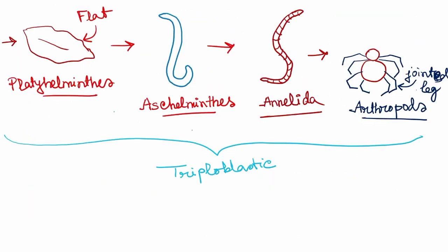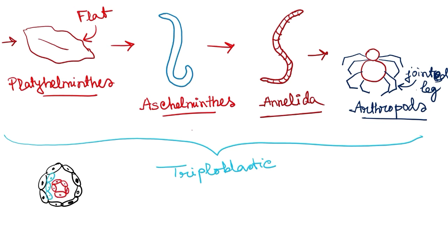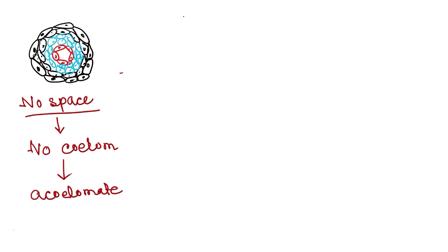Platyhelminthes have all three germ layers — ectoderm, endoderm, and mesoderm — but there is no space between the visceral and parietal layers because all the space is filled by the mesodermal cellular layer. Therefore they do not have any body cavity and are called acoelomates.